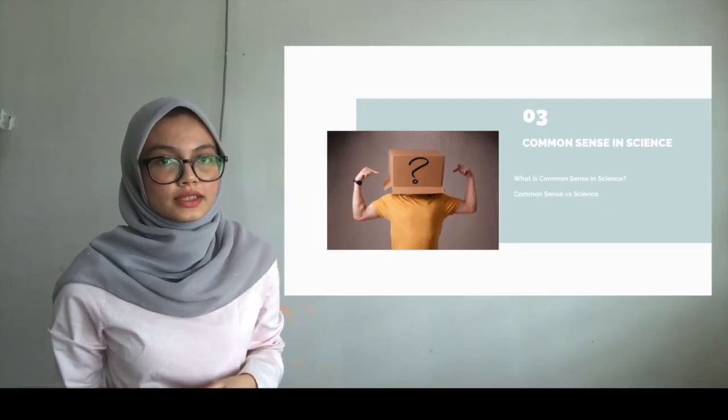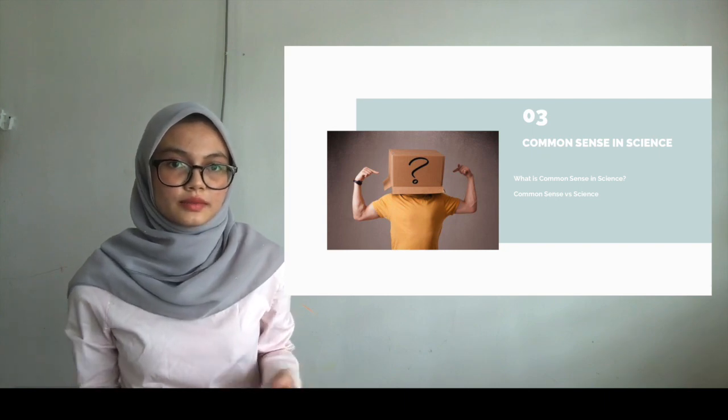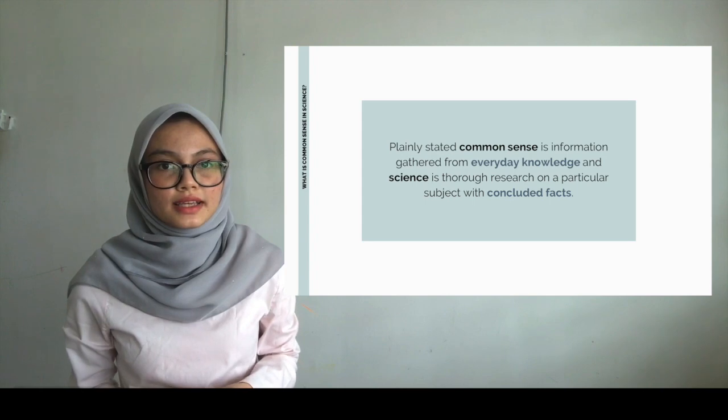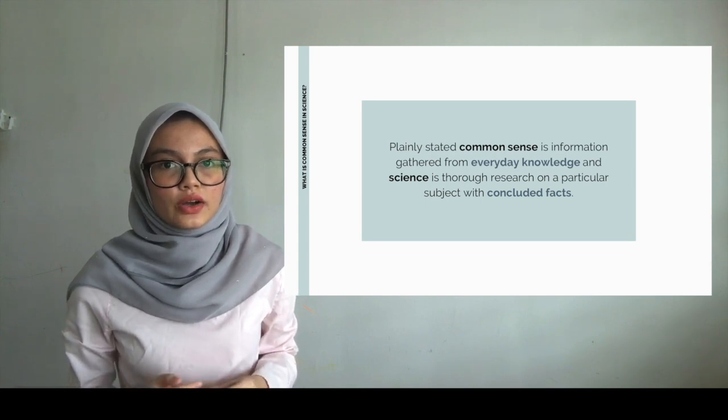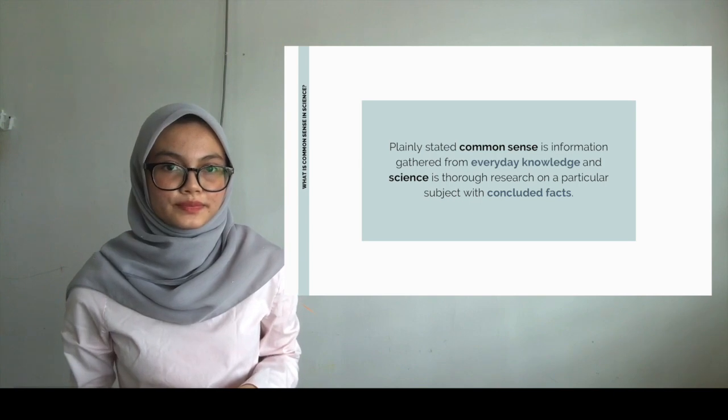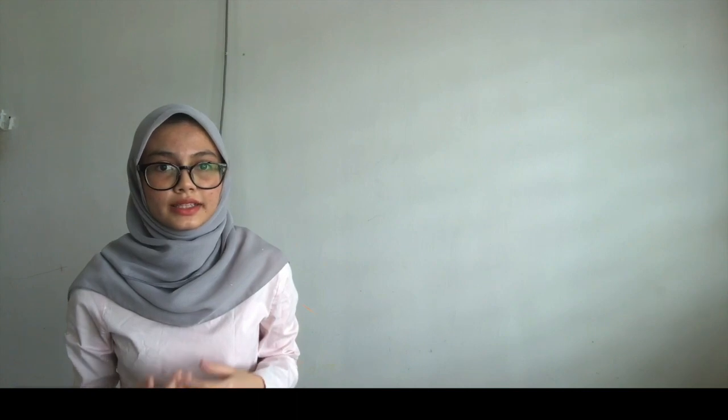Now we will go through the next topic, which is common sense in science. What is common sense? Plainly stated, common sense is information gathered from everyday knowledge, and science is true research on a particular subject with concluded facts. Common sense is important for humans. It helps us to survive in all of the usual situations of life. But as the knowledge of the human race has increased, it seems that common sense has collided with our ideal rational scientific methods and with our scientific theories. The theory of general relativity, proven with many different empirical tests, is a very accurate representation of the gravitational force, the nature of light, and so on.